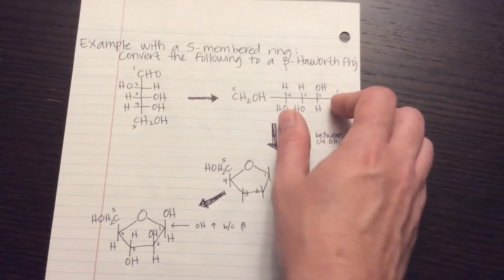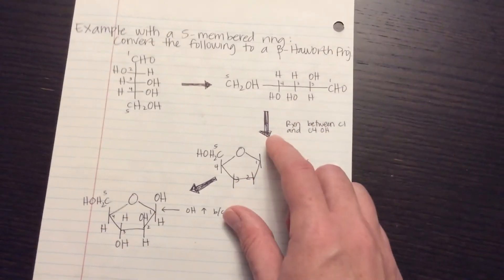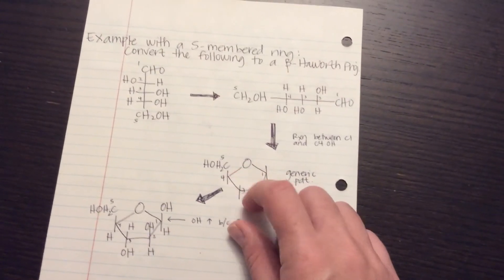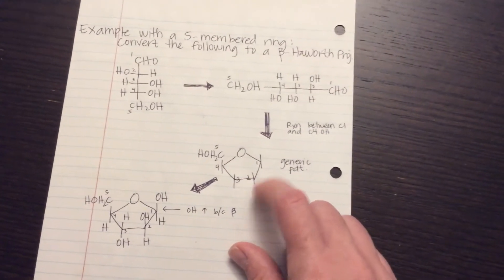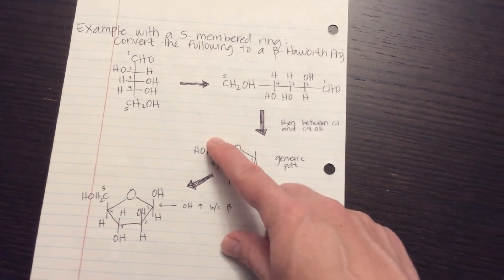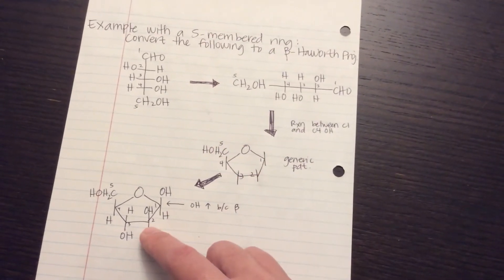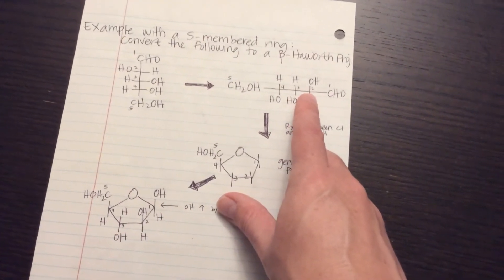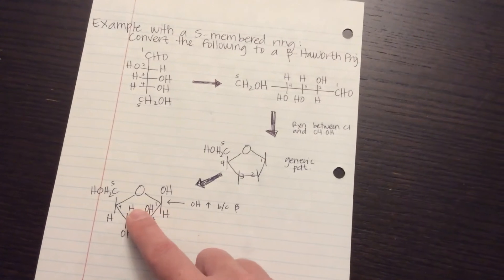Now the reaction's between this carbon and this OH. So that's what gives me my basic generic product. One, two, three, four, five. And then how do I figure out what's on 2 and 3? I just look at this. 2 and 3. OH up, H up.